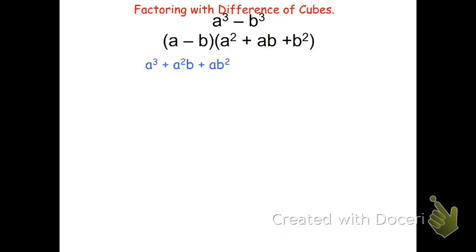If I now distribute the -b, I get -b times a² which is -a²b, -b times ab which is -ab², and -b times b² which is -b³.